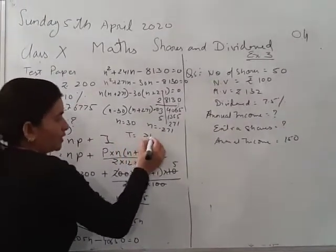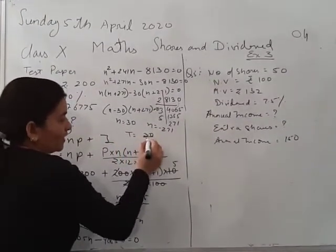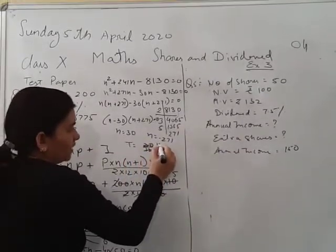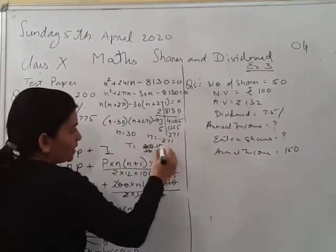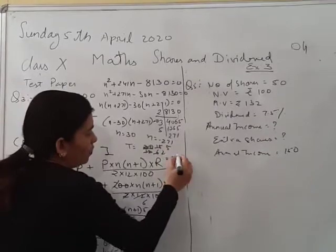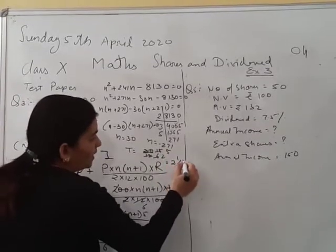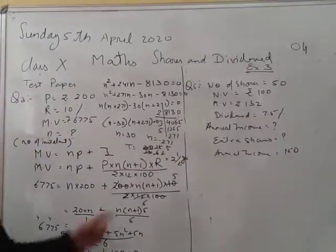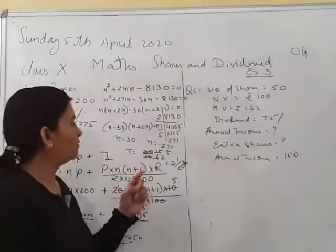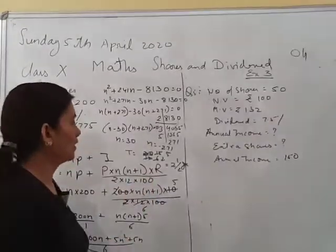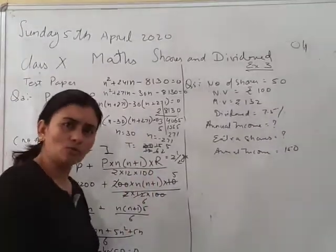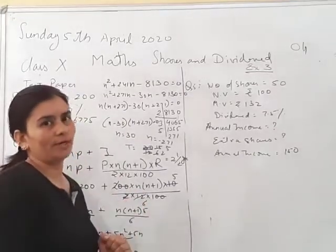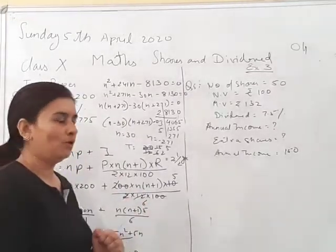Suppose you have to convert into years — divide 30 by 12, which gives 2 and a half years. So our answer is: time equals 2 and a half years. Is it clear how to solve this type of question when the number of installments has to be found out?